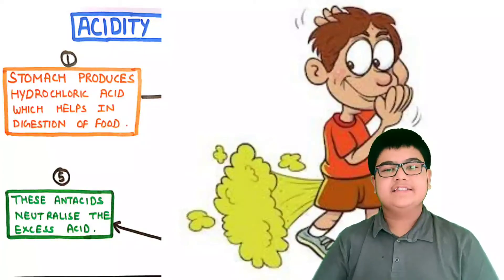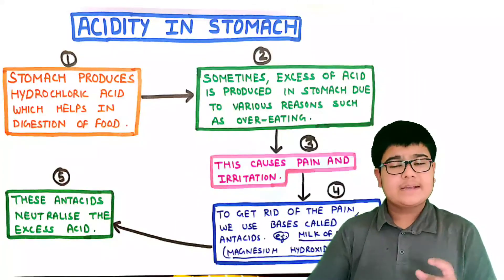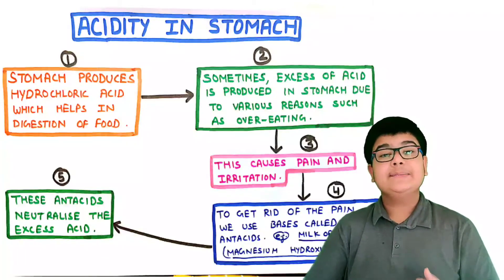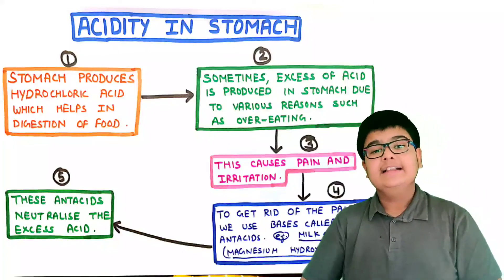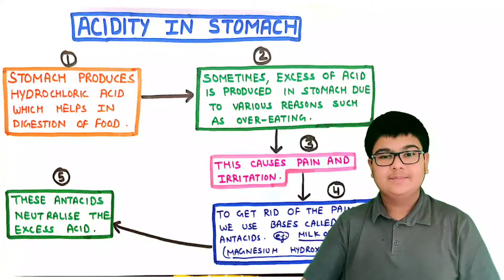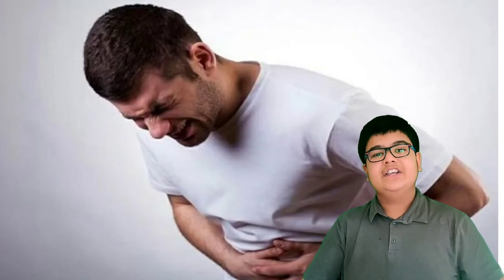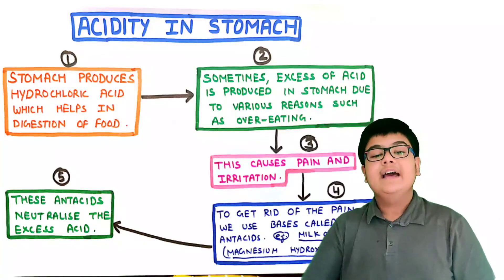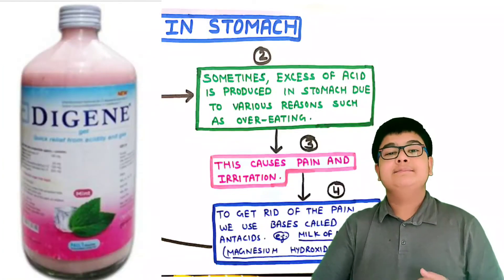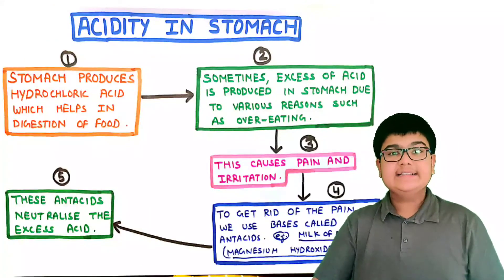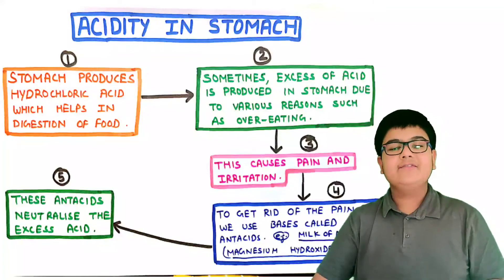Now let us see acidity in the stomach. The stomach produces hydrochloric acid which helps in the digestion of food. But sometimes when we overeat, excess acid is produced in the stomach, causing pain and irritation. To get rid of this pain, we use bases known as antacids — for example, milk of magnesia, that is magnesium hydroxide. These antacids neutralize the excess acid in our stomach and provide relief from the pain.